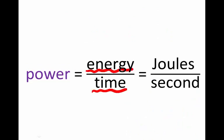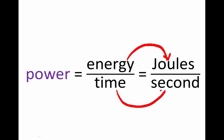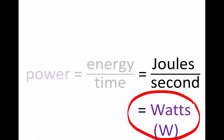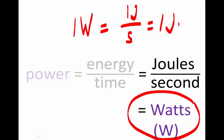Since power is energy per time — the rate at which energy is transferred — what are its units? Energy is measured in joules and time in seconds. So power is measured in joules per second, or joules second to the minus one. Joules per second is given a special name of its own: watts. So one watt is the same thing as one joule per second, one joule second to the minus one.